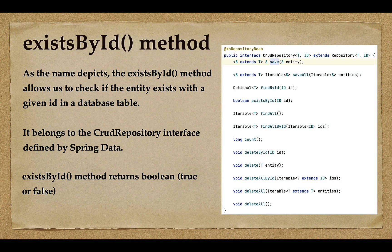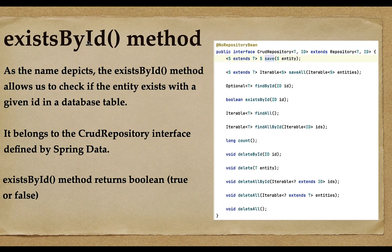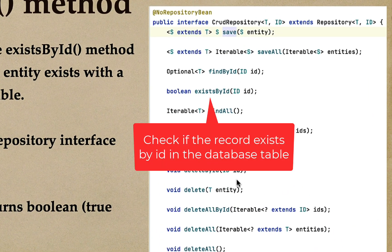Hi, welcome back. In this lecture, we'll see how to check whether an entity exists with a given ID in the database table or not by using the existsById method. The existsById method is from the CrudRepository interface. It takes an ID as the method argument and returns a Boolean as the return type. Whenever you need to check whether a particular entity exists with a given ID in the database table, you can use the existsById method.